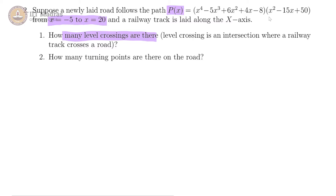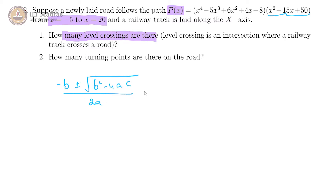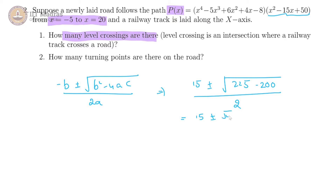The easy way to start is to first find the roots of the quadratic. That would be using minus b plus or minus root of b squared minus 4ac divided by 2a. We get 15 plus or minus root of 225 minus 200 divided by 2, which is 15 plus or minus root 25 divided by 2, that is essentially 5 or 10. So you get 10/2 or 20/2, giving roots 5 or 10, and they are both within the given range.